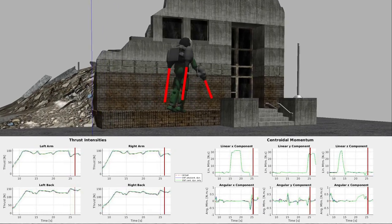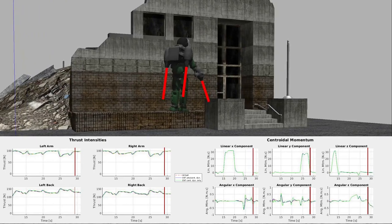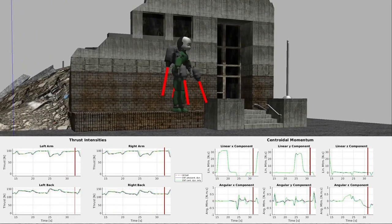In the bottom right, we see the robot's centroidal momentum linear and angular components, comparing the estimated values against the measured values.